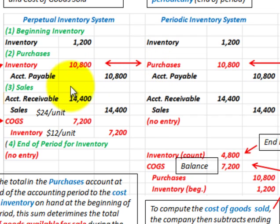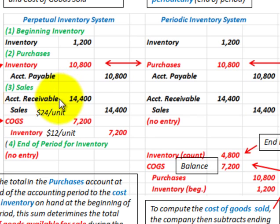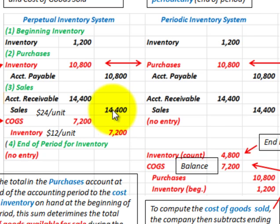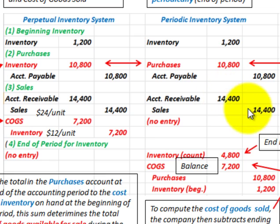Now with our sales, this is where some differences come in. For the perpetual inventory system, accounts receivable is debited for the total sales amount of $14,400, and we credit sales for $14,400. The same applies to the periodic inventory system — accounts receivable and sales are both recorded at $14,400.